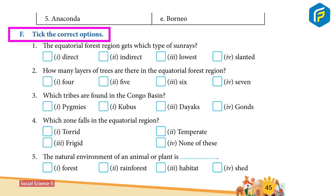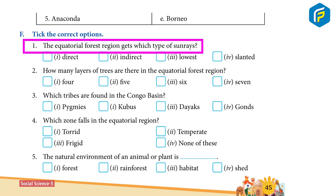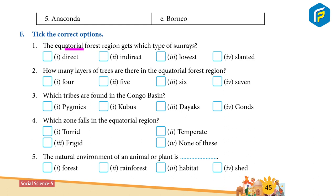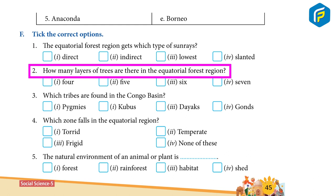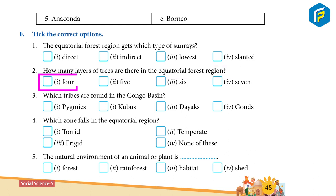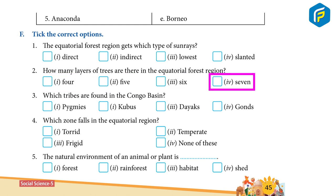Choose the correct option: 1) The Equatorial Forest Region gets which type of sun rays? 1-Direct, 2-Indirect, 3-Lowest, 4-Slanted. 2) How many layers of trees are there in the Equatorial Forest Region? Options: 4, 5, 6, or 7.